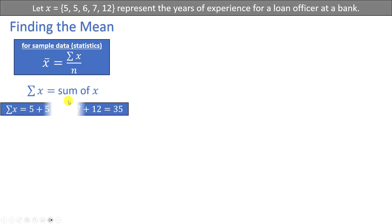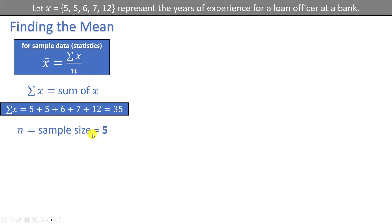In this particular example, the sum of X can be found by adding up all of these values together: 5 plus 5 plus 6 plus 7 plus 12, which is equal to 35. The value for lowercase n, our sample size, is going to be 5 because there are five numbers in our sample. To find the mean X-bar, we take the sum of X, which is 35, and divide by the sample size n, which is 5, and we get 7. The mean number of years of experience for a loan officer at this bank is 7 years.